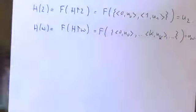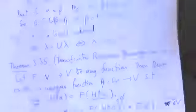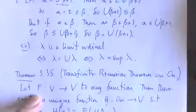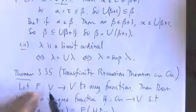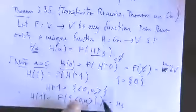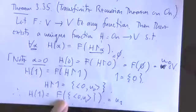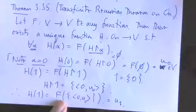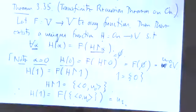A student asks: I don't understand what F of an ordered pair is. The instructor replies: I'm not obliged to say very much about it because part of the data is that I've got a function that acts on any sets, so F can act on this set. The student clarifies: I thought V was a set, but no — V is the universe of all sets. Correct.